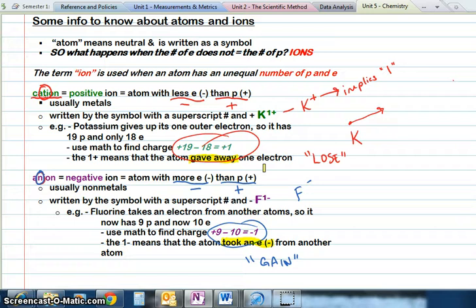Taking is negative language and giving is positive language. This can help you remember what happens with cations and anions and their electrons.